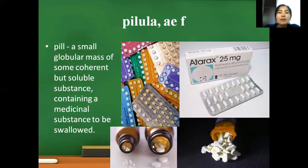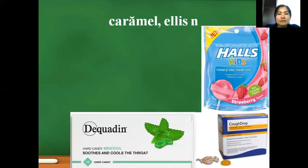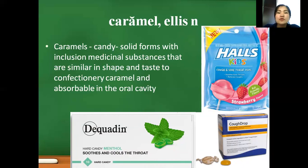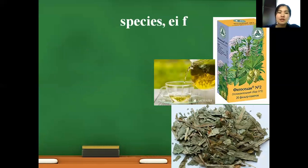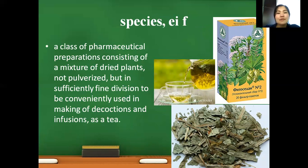A small globular mass of some coherent but soluble substance containing a medicinal substance to be swallowed. Caramel — candy — solid forms with inclusion of medicinal substances that are similar in shape and taste to confectionery caramels and absorbable in the oral cavity. Species — a class of pharmaceutical preparation consisting of a mixture of dried plants, not pulverized but in sufficiently fine division to be conveniently used in making decoctions and infusions.